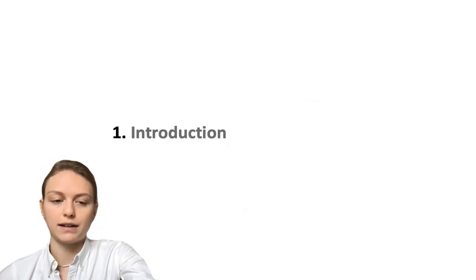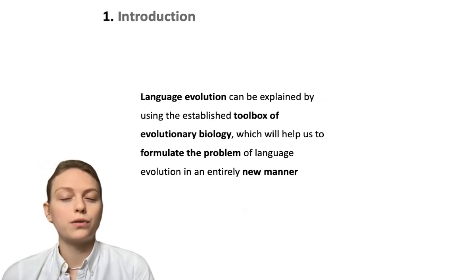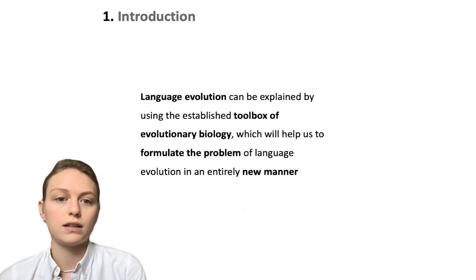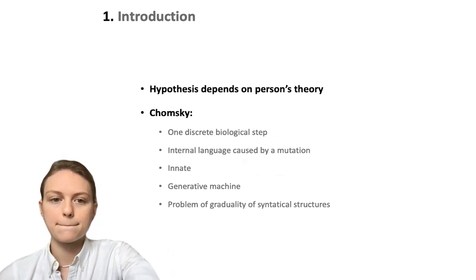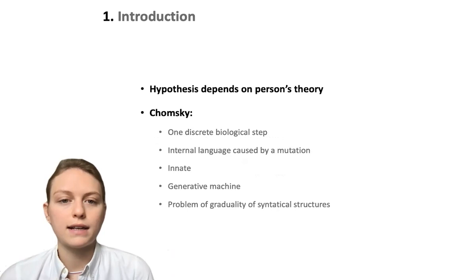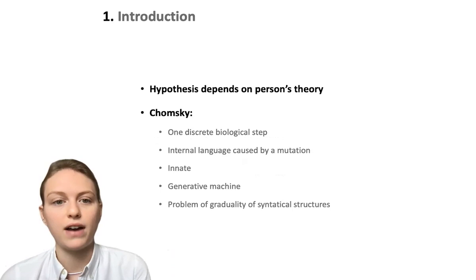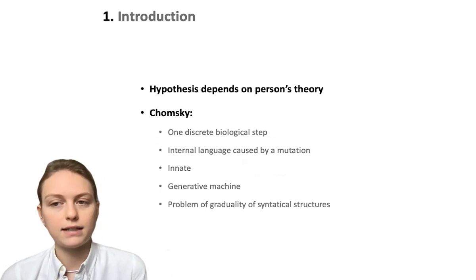Let's start with the introduction. Our main thesis is that language evolution can be explained by using the established toolbox of evolutionary biology, which will help us formulate the problem of language evolution in an entirely new manner. To understand this, one has to think about what language is, because the hypothesis of how language emerged depends on what a person's theory of language actually is.